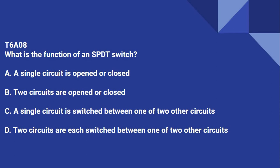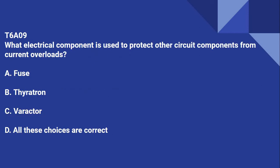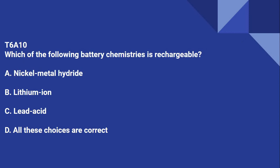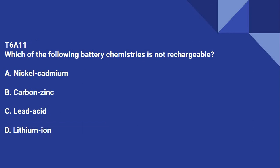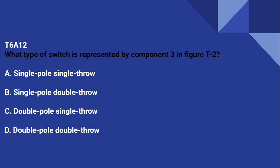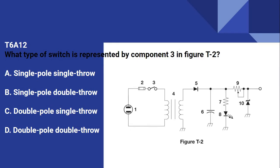T6A08: What is the function of an SPDT switch? A single circuit is switched between one or two other circuits. T6A10: Which of the following battery chemistries is rechargeable? That is all of the above — nickel metal hydride, lithium ion, and lead acid. T6A11: Which of the following battery chemistries is not rechargeable? That is carbon zinc. T6A12: Which type of switch is represented by component 3 in figure T2? That answer is single pole, single throw.